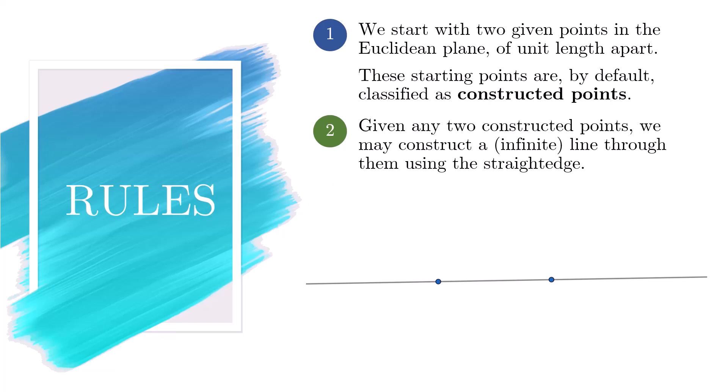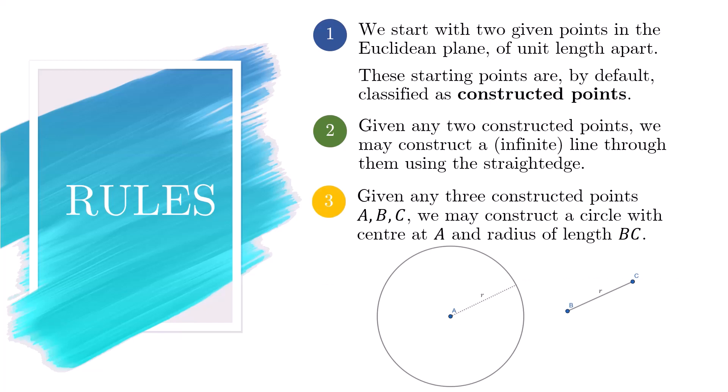Rule number 3. Given any three constructed points A, B and C, we may construct a circle with centre at A and radius of length BC.